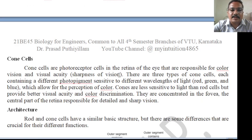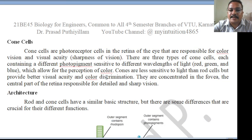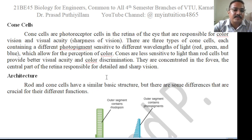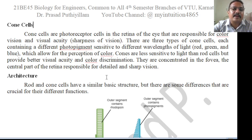Cone cells are photoreceptors mainly responsible for color vision and visual acuity — the sharpness of vision. There are three types of cone cells, each containing a different photopigment sensitive to different wavelengths of light: red, green, and blue, which allow for the perception of color. Cone cells are less sensitive to light than rod cells but provide better visual acuity and color discrimination.